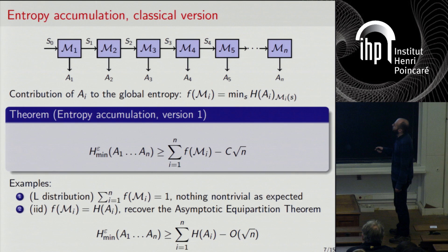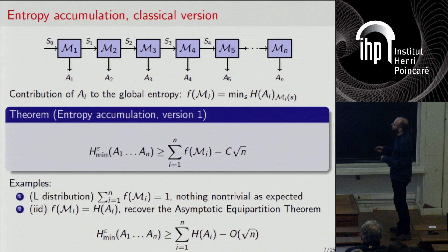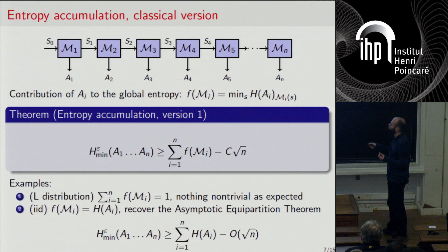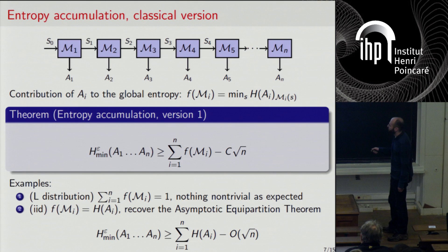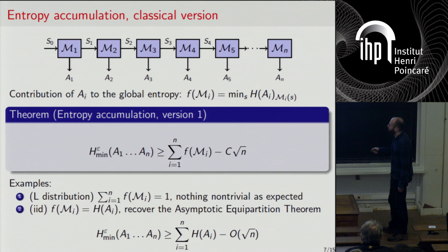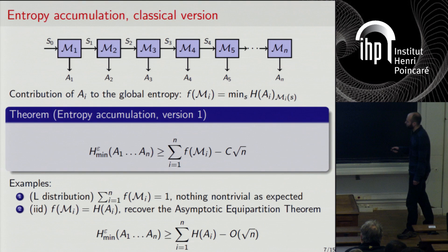Let's look at our two examples. For the first distribution, which was a counterexample to naive additivity, we had F(M_1) = 1 and all the rest equal to zero, so the sum equals one. The right-hand side gives nothing non-trivial — but this was expected, since we knew we cannot extract much from that source. In the IID case, the contribution of each part is just the entropy of the marginal, and we get exactly the statement that if the A_i's are IID, then the smooth entropy is well approximated by the sum of the Shannon entropies up to a square root term.